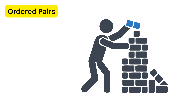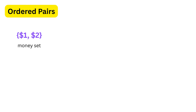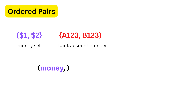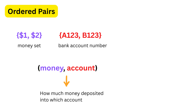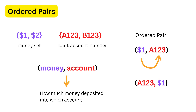First we begin with the idea of ordered pairs, because this is the basic building block of everything that comes next. Imagine one set contains amounts of money like one dollar and two dollars, and another set contains bank accounts. Suppose we make a pair of money and account which tells us how much money is deposited into which account. The ordered pair of one dollar and this account number means one dollar is deposited into that account.